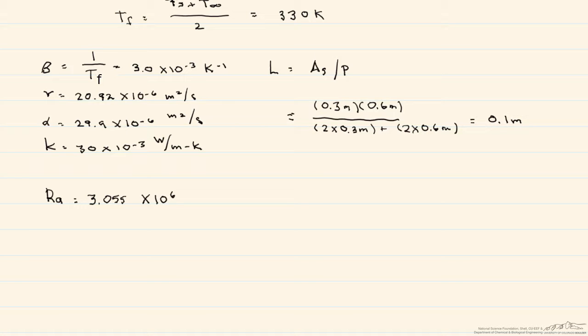Now that we have our Rayleigh number, we can decide what correlations to use. For our upper surface, the correlation for the Nusselt number is equal to 0.54 Rayleigh to the one quarter, which equals 22.6.